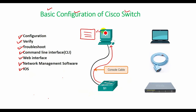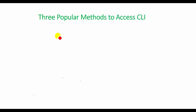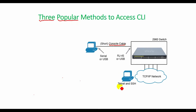The Cisco IOS CLI allows the user to use a terminal emulation program which accepts text entered by the user. The switch CLI can be accessed through three popular methods: the console, Telnet, and Secure Shell or SSH. Telnet and SSH use the IP network in which the switch resides to reach the switch. The console is a physical port built specifically to allow access to the CLI, as shown in this diagram.